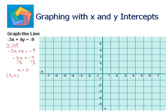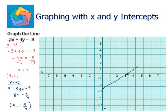For the y-intercept, we put x as 0. So negative 3 times 0 becomes 0, giving 0 plus 4y equals negative 9, so y equals negative 9 by 4. The x-intercept 3 comma 0 lies here, and the y-intercept 0 comma negative 9 by 4 lies here. Joining the two points forms a straight line, and this is the graph of the line negative 3x plus 4y equals negative 9.